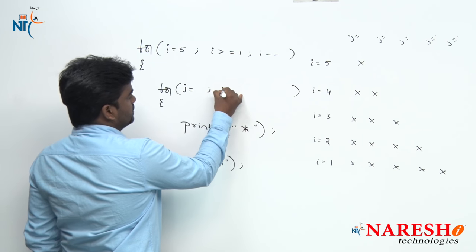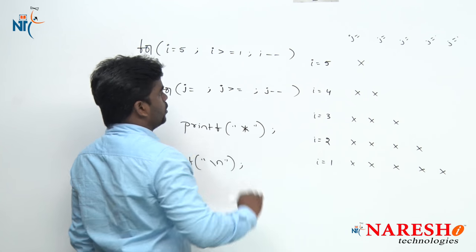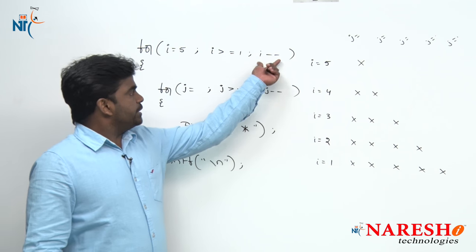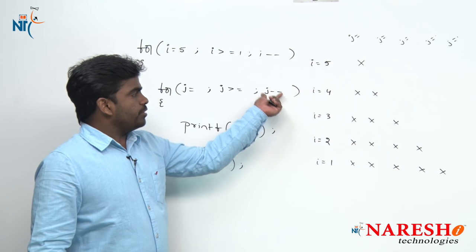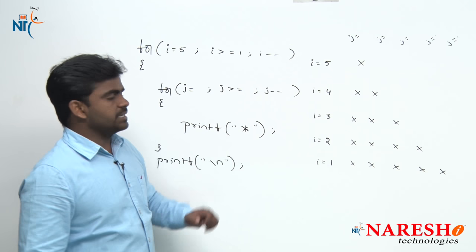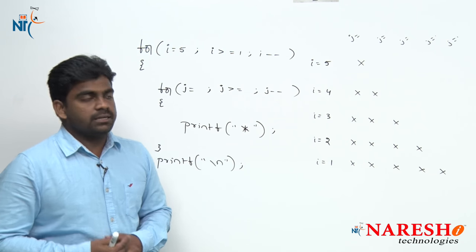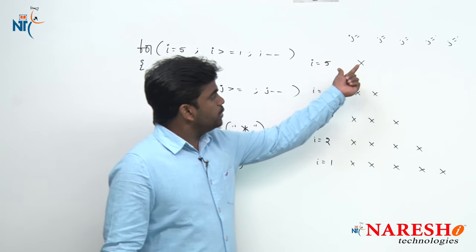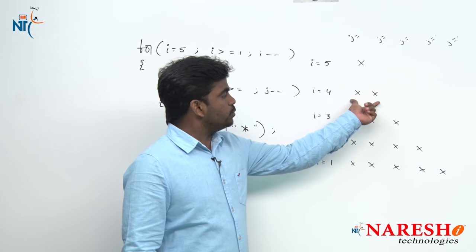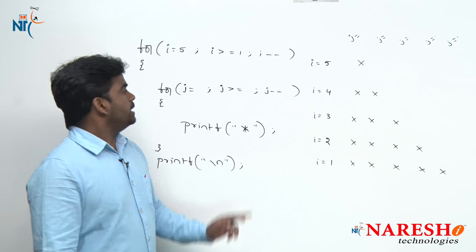What is the initialization? What is the condition? Here we are using a decrement operator — this we already know. Here we need to use a decrement operator, but what is the initialization and what is the condition? First we need to print only one star, next only two stars, next only three stars. How to write?